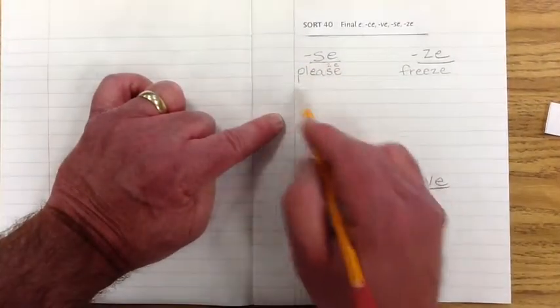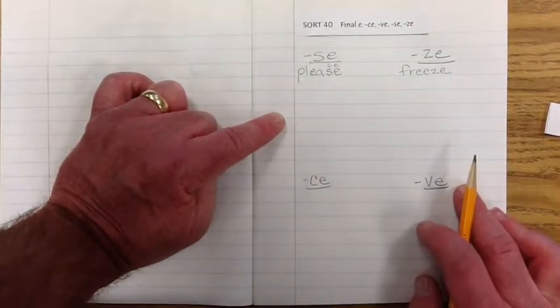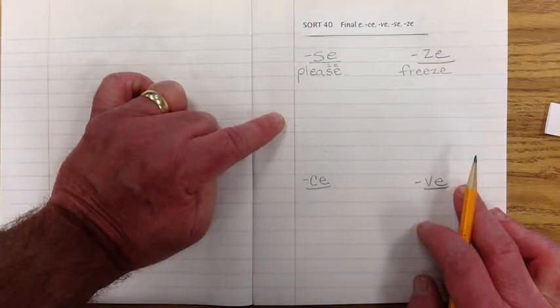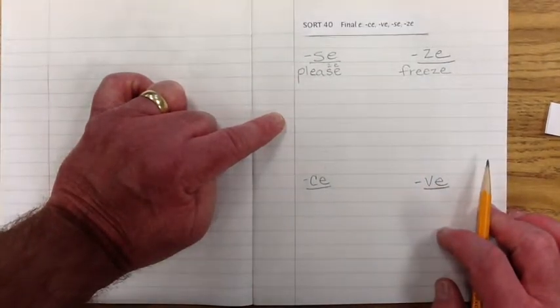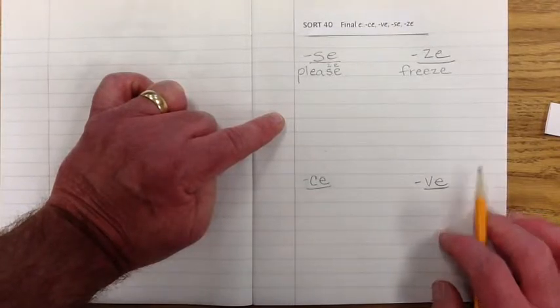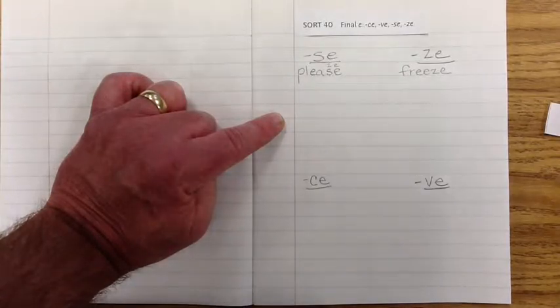So, this one's a little bit tricky, isn't it? Because we think it's going to be the S sound. But in reality, at least this word right here, that makes the Z sound. Please. Okay. All right. Let's bring in another one.